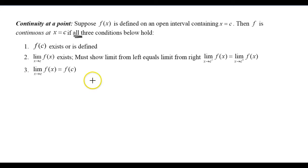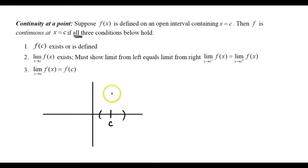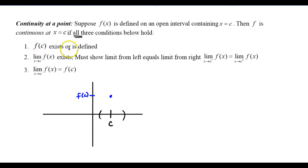Let's draw a picture to talk about why we need all three conditions to hold. f of x is defined on an open interval containing x equals c. The first part says f of c has to exist — when I substitute c in, I have to get out some value, so that's my filled-in circle. I've satisfied part one: f of c exists. When I substitute it in, I get something out.